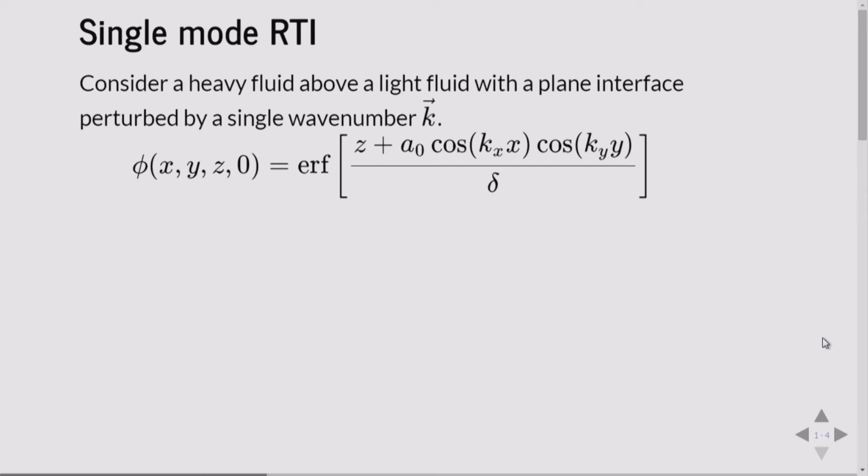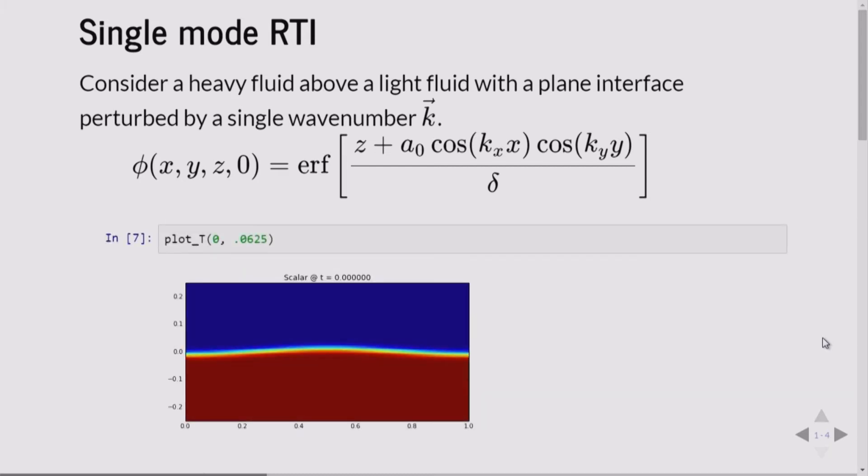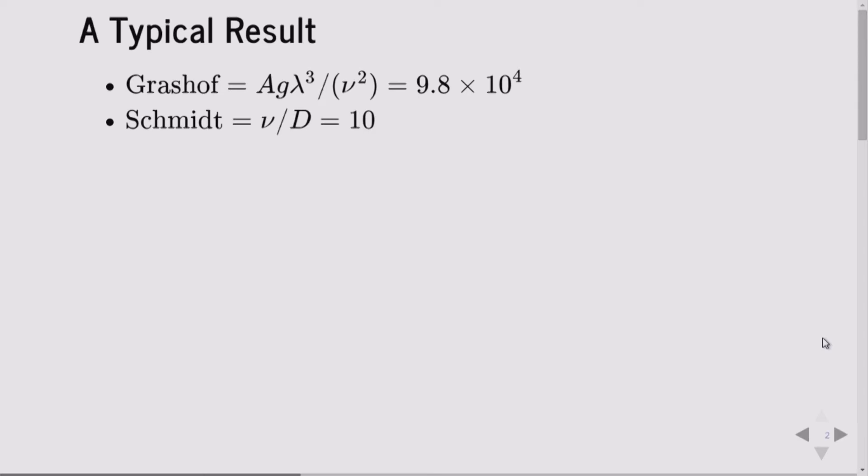The simplification to the single-mode Rayleigh-Taylor instability just says that our initial perturbation is going to look like the product of cosines or the product of sines. It's going to be smeared up by an error function. It's going to be nice and smooth. There are no discontinuities. There are no shocks. So what does it actually look like? These are simulation results of a 3D simulation at a Grashof number of about 10 to the 5. The Grashof number sort of looks like the square of a Reynolds number. So this is below what you would traditionally associate with a turbulent transition.